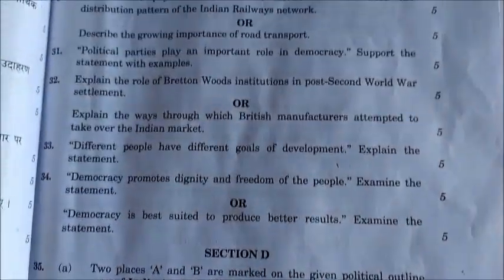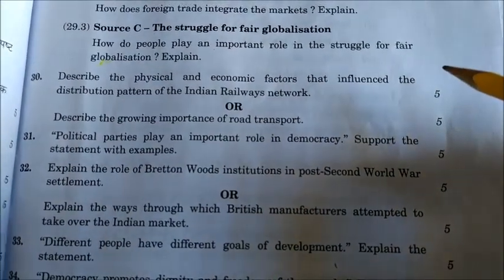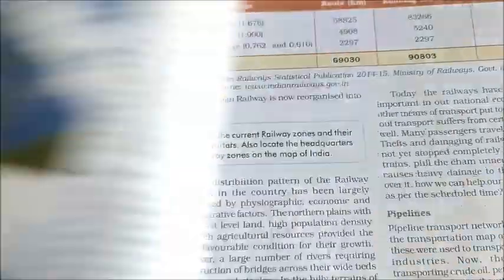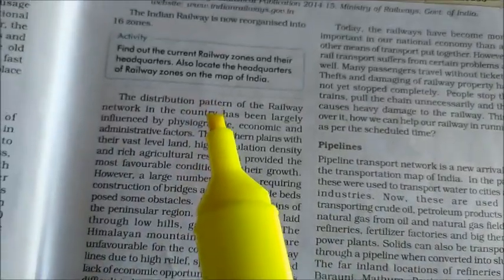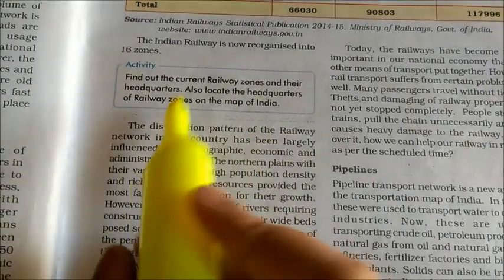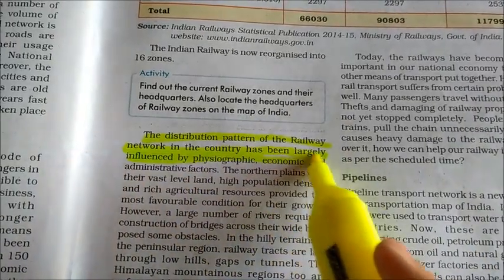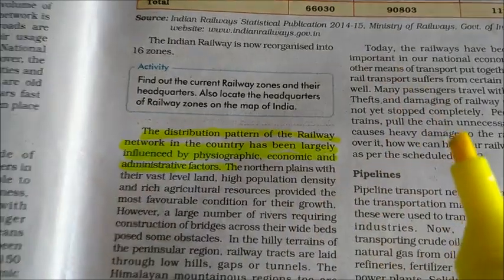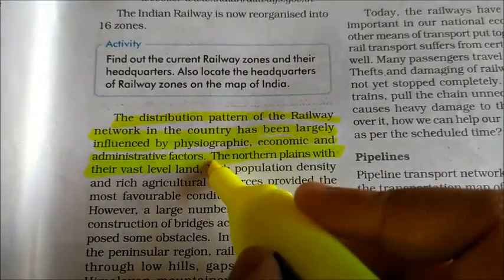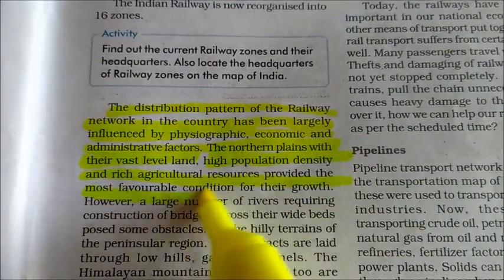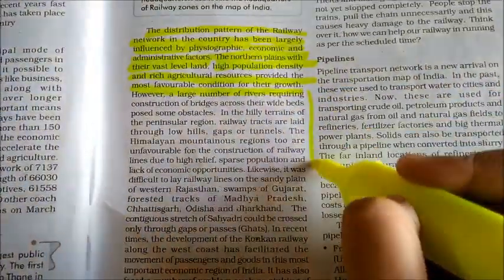Question number 30: describe the physical and economic factors that influenced the distribution pattern of the Indian railways network. The answer is on page number 85. First write for physical factors, then for economic factors. The distribution pattern of Indian railways has been largely influenced by physiographic, economic, and administrative factors. The northern plains with their vast level land, high population density, and rich agricultural resources provide the most favorable conditions for their growth.